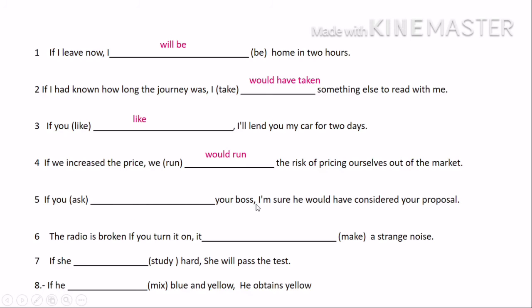Number five: 'If you ask your boss, I'm sure he would have considered your proposal.' 'Would have considered' is third conditional, so the part with 'if' must go with past perfect: 'If you had asked your boss, I'm sure he would have considered your proposal.' Number six: 'The radio is broken. If you turn it on, it makes a strange noise.' This is a hundred percent true — present and present — so it's zero conditional. Third person 'it' has an S: 'it makes'.